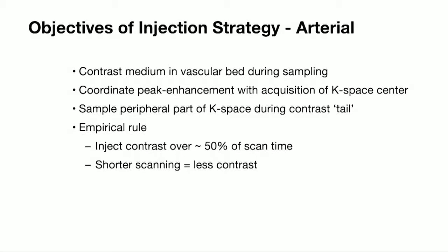Our objectives are to have the contrast medium in the vascular bed during sampling, and to coordinate the peak enhancement with the acquisition of the K-space centre. We sample the peripheral part during the contrast tail. As an empirical rule we inject contrast over about 50% of the scan time. We're injecting into a vein, so it's got to pass through the heart and pulmonary circulation — the bolus gets longer as it goes through that and comes out the other side.